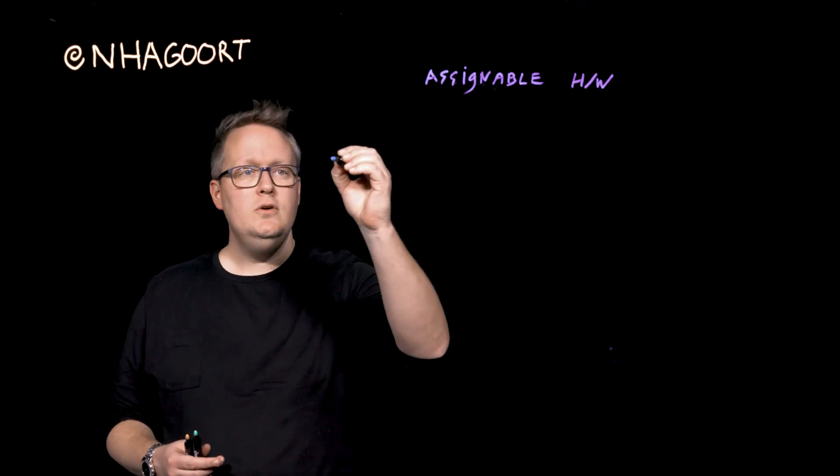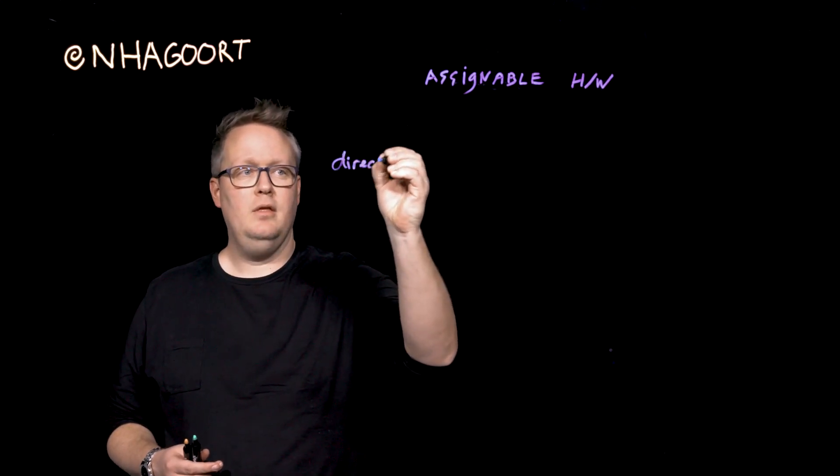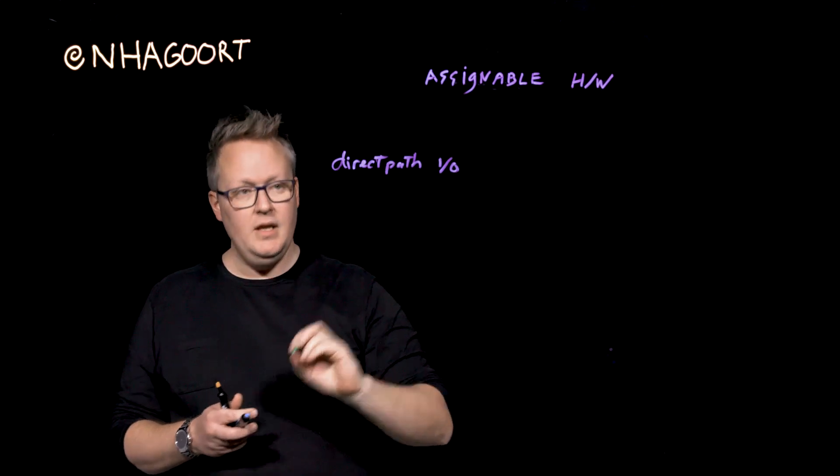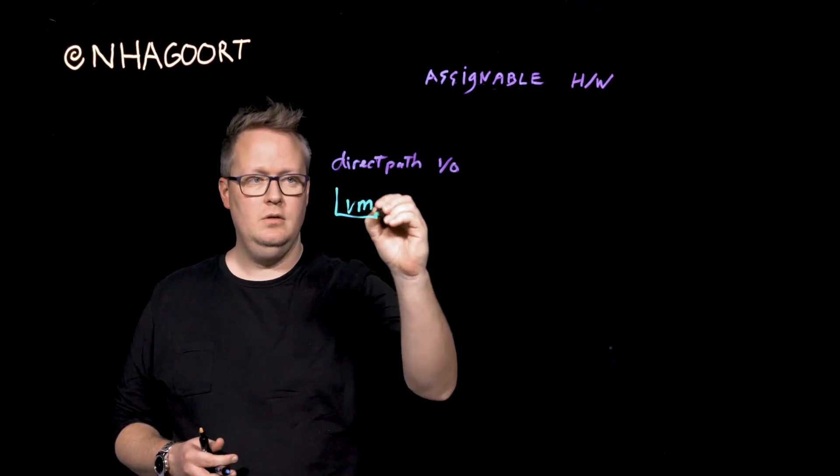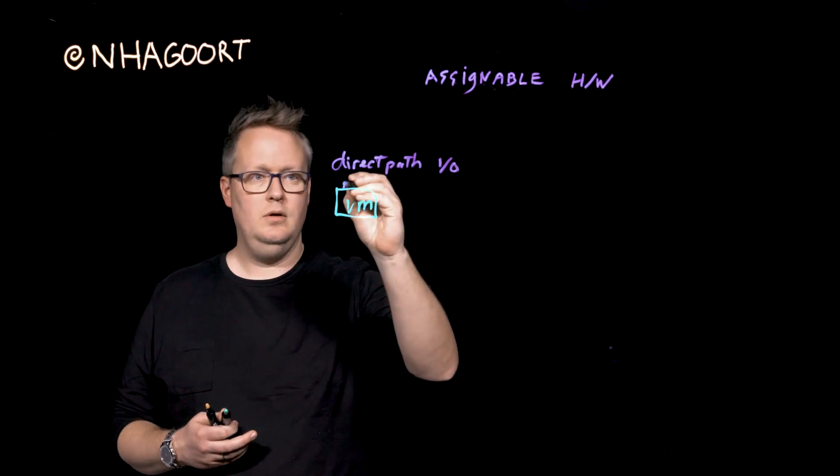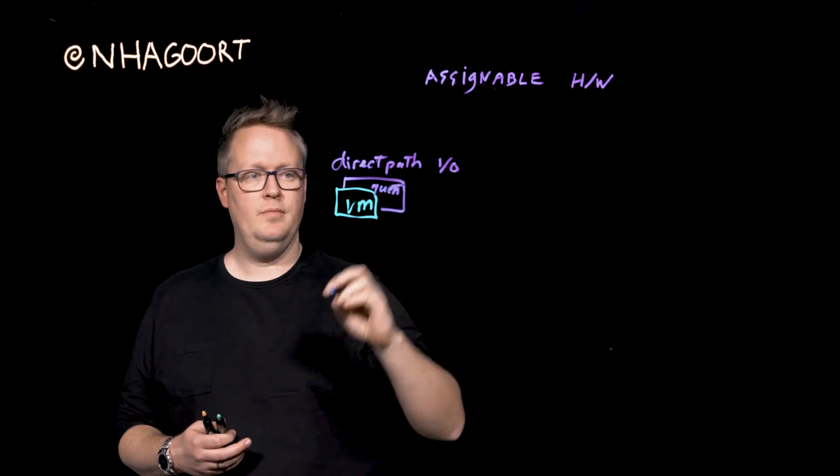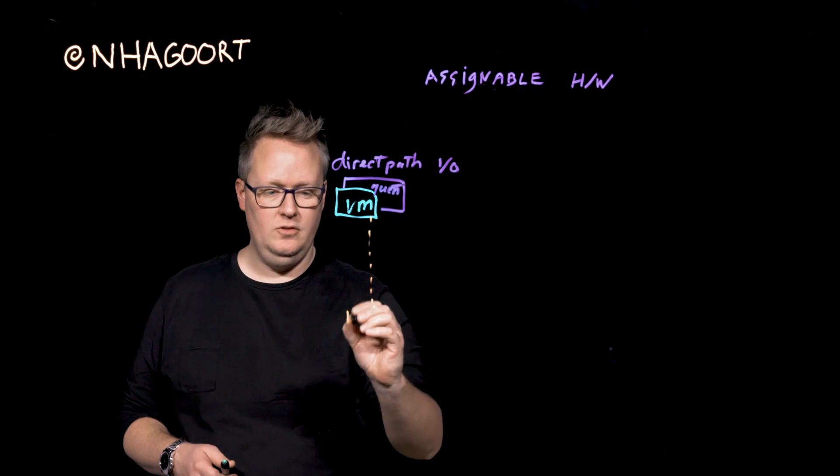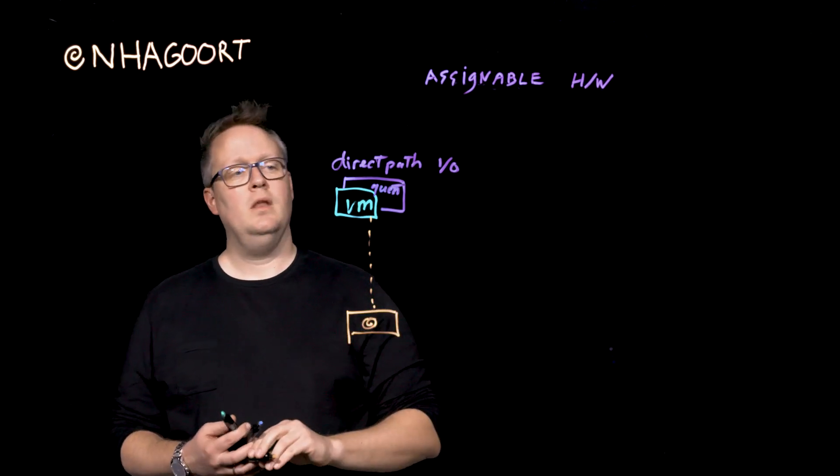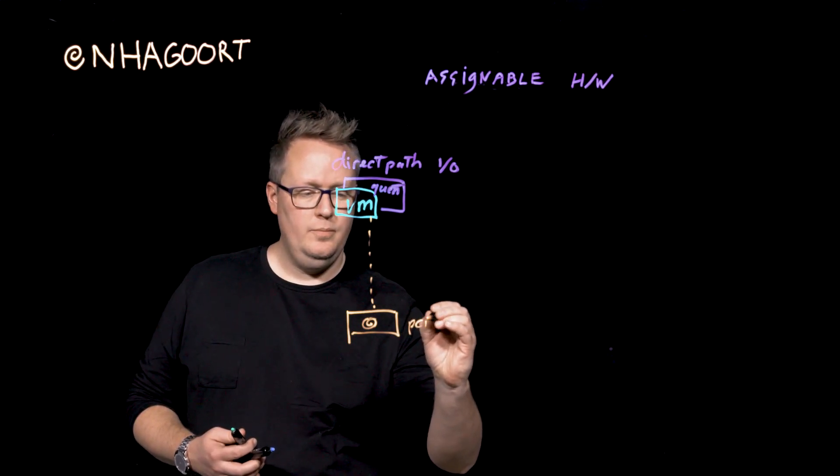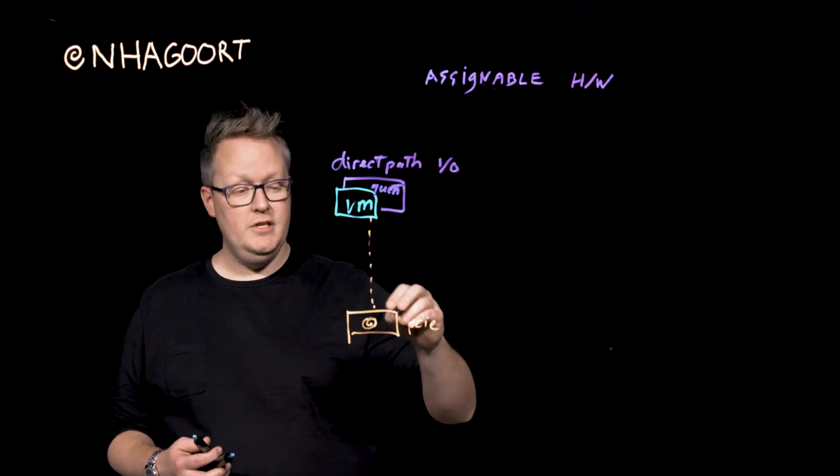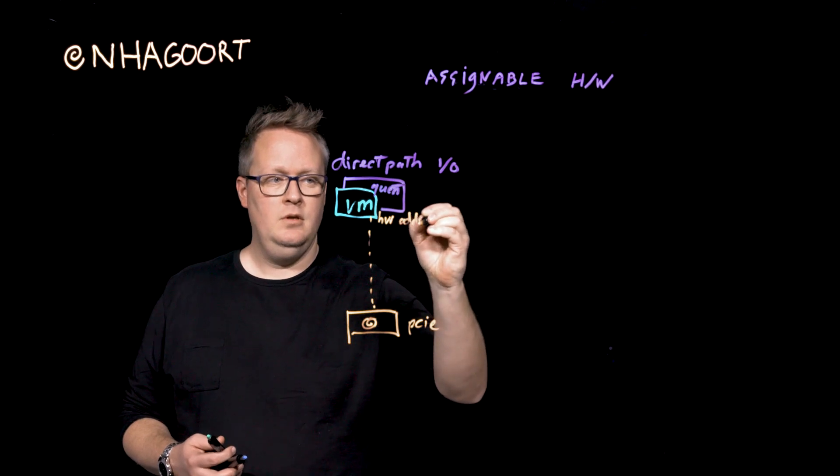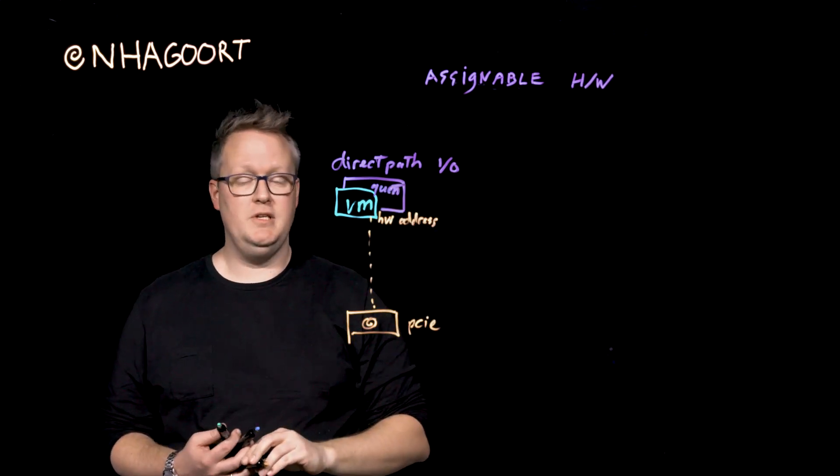Now, we used to have direct path I/O. And this is basically a virtual machine and a guest running inside the virtual machine. And the virtual machine and the guest are basically directly connected to a PCIe device. So the hardware address of this specific PCIe device is hard-coded in the VMX file of that specific virtual machine.